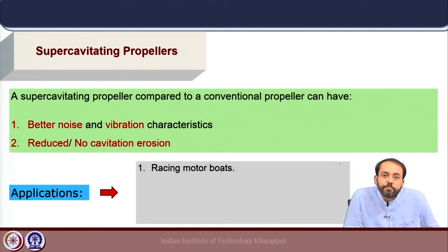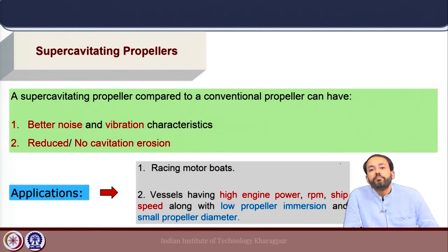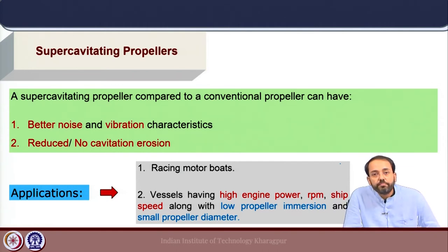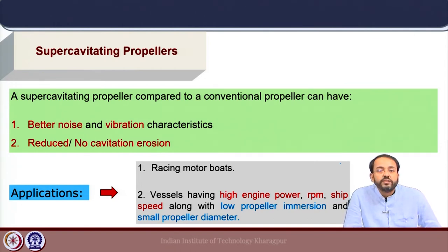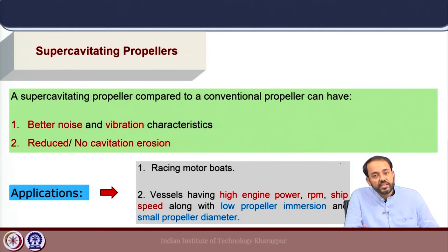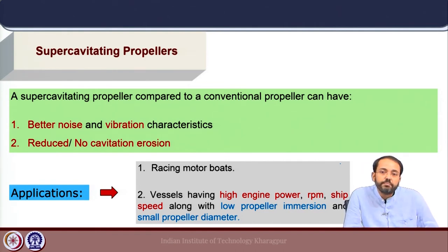In terms of application, supercavitating propellers are useful for high speed vessels like racing motor boats where, in comparison to high engine power, the propeller RPM is also high but the propeller immersion as well as the available diameter is low. These are ideal conditions for cavitation to occur, and hence conventional propellers are not good solutions for these cases; supercavitating propellers can be effectively applied for better performance.